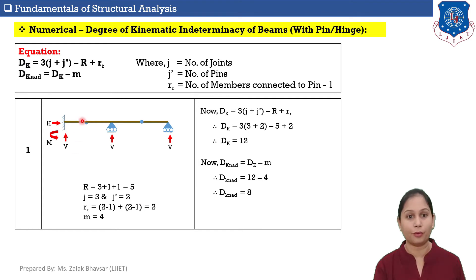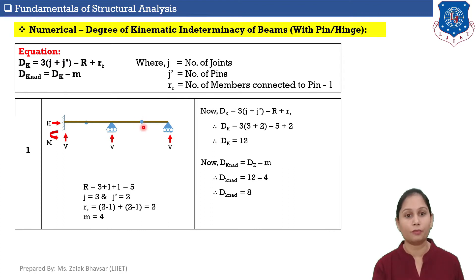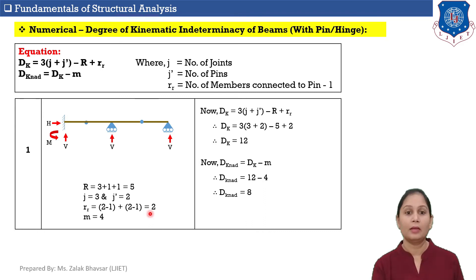For the first pin, 2 members are connected, so RR equals 2 minus 1 equals 1. Similarly, for the second pin, 2 members are connected, so RR equals 2 minus 1 equals 1. Total RR equals 1 plus 1 equals 2. Number of members M equals 4.